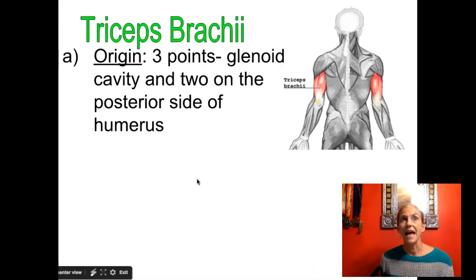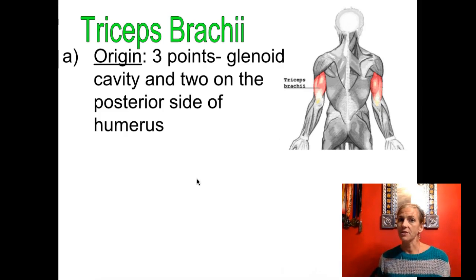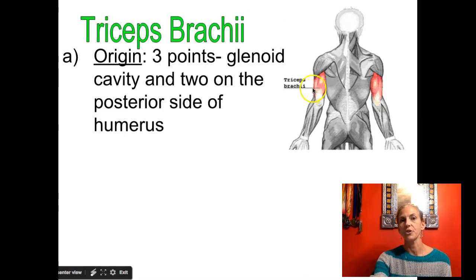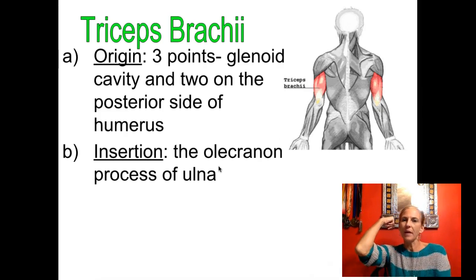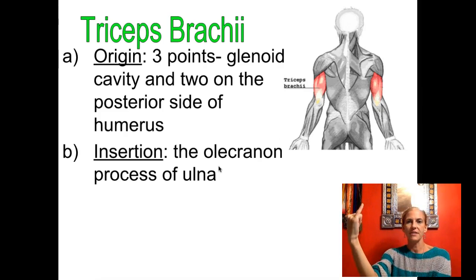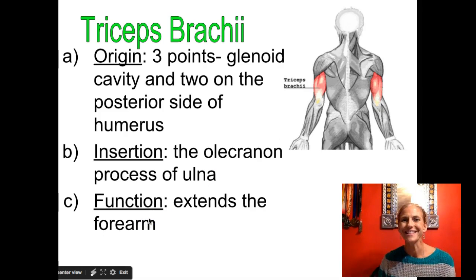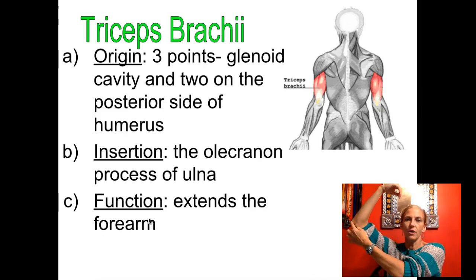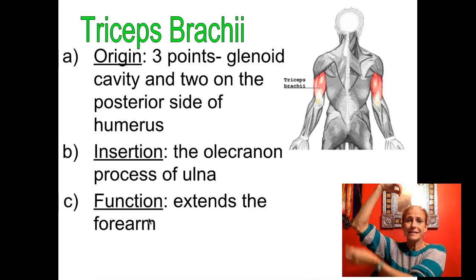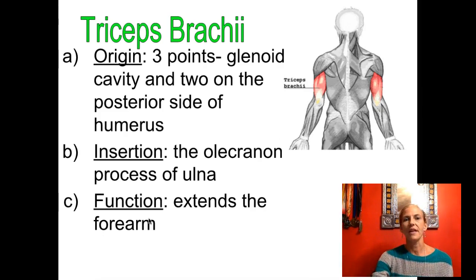Triceps tells us — using LADSNOR — that it has three points of origin: the glenoid cavity, similar to the bicep, and two posterior points on your humerus. It inserts on the olecranon process — that's the bone in your elbow, what you might think of as your funny bone. That's the end of the ulna, which is on the pinky side and connects with the humerus. When I pull on that olecranon process toward the back of my armpit, it straightens my arm — that's extension, which is an increase in angle at a joint.